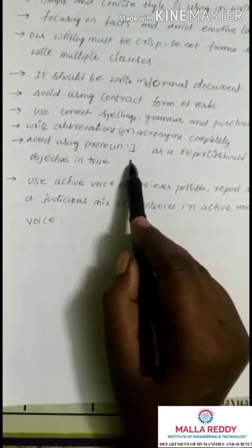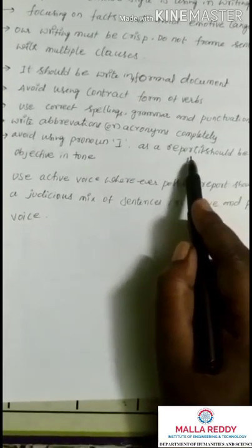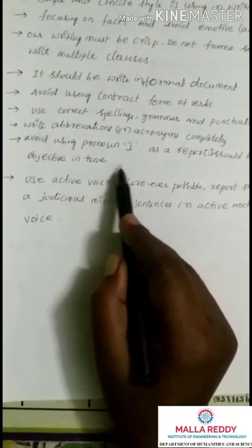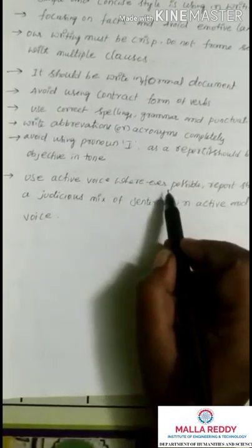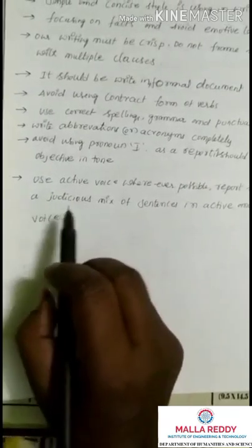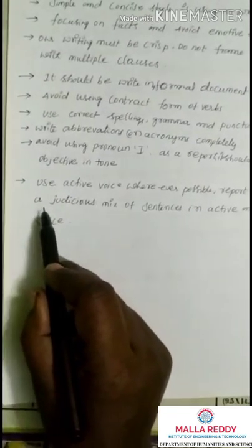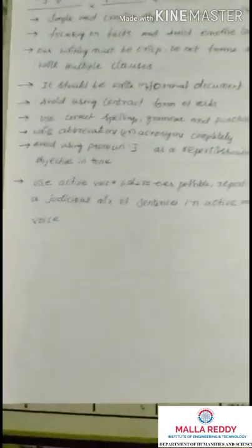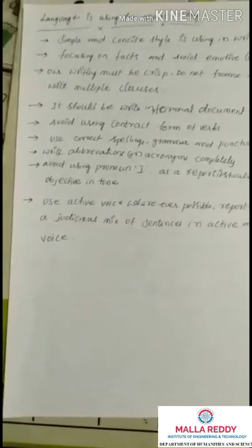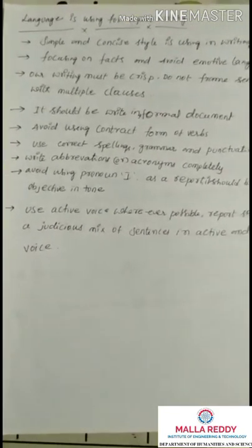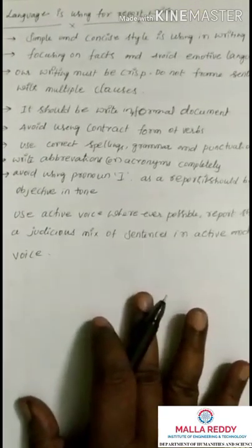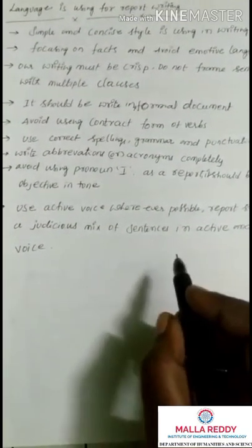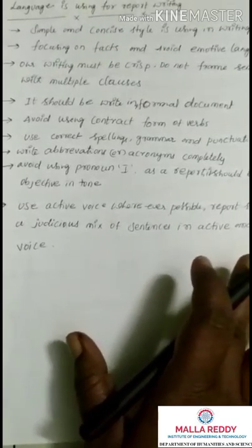Avoid using first-person pronouns like 'I' or 'me' — a report should be objective in tone. Use active voice wherever possible, though a report should be a judicious mix of active and passive voice wherever required. This concludes the topic of report writing; the next session will introduce a new topic.